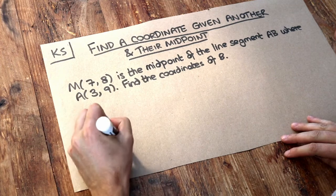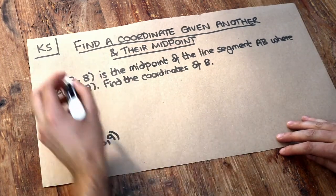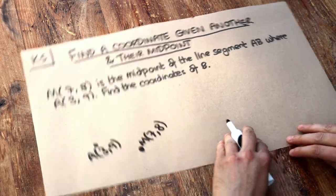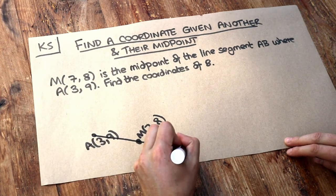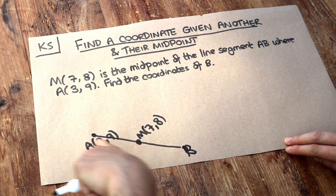We've got some points here, A(3,9), and then we've got another point M, which is (7,8), let's just say it was over here. And we're told that M is the midpoint of AB. So if we've got a point here, B, which we need to find the coordinate of, and we have this line segment connecting AB.